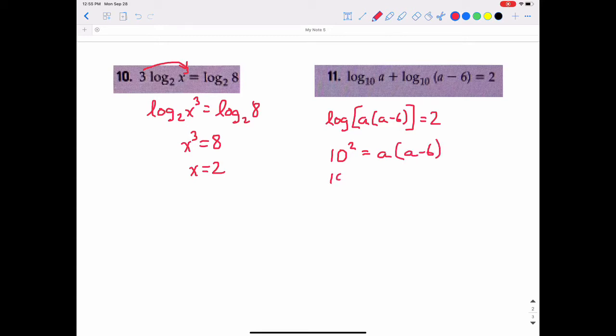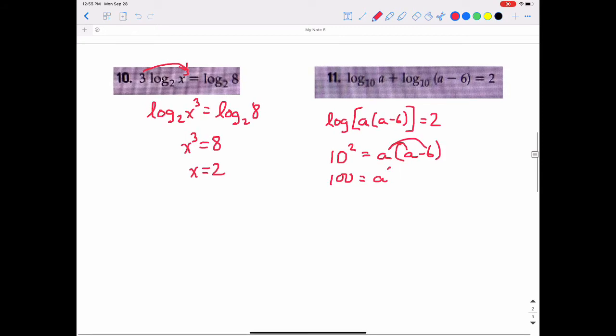10 squared is 100. And go ahead and distribute this. So that would be a squared minus 6a. And again, it looks like we have a quadratic equation. So I will get it set equal to 0. So a squared minus 6a minus 100, that's going to equal 0.